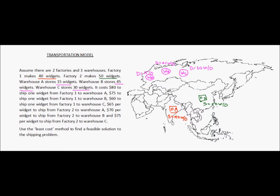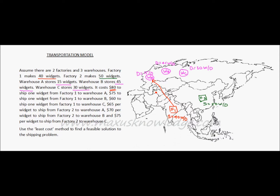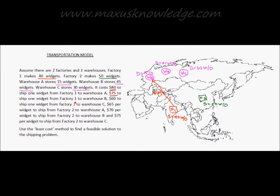Any of the factories can ship material to any of the warehouses. We have been given the cost of shipping one widget from each factory to each warehouse. From factory one to warehouse A the cost is $80 per widget, $75 to ship one widget from factory one to warehouse B, and $60 per widget from factory one to warehouse C.